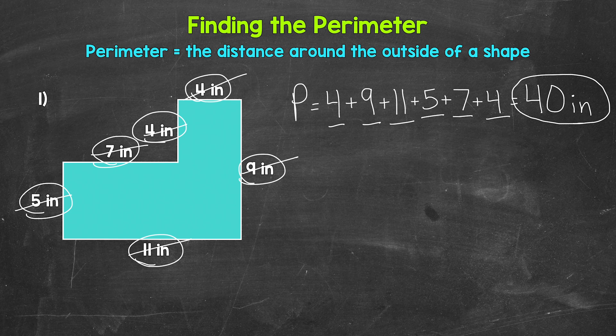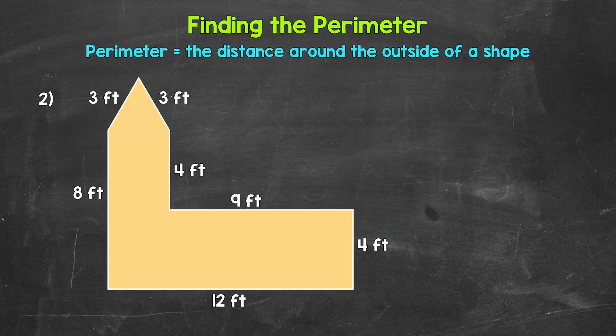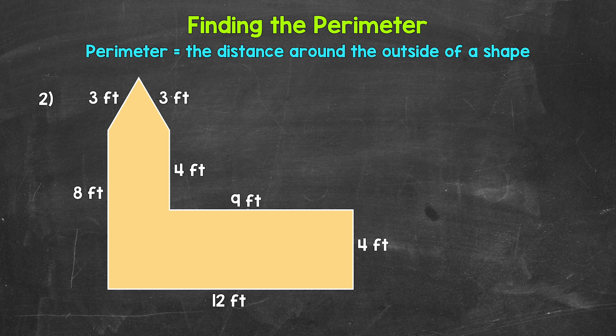Let's move on to number two. Taking a look at number two, let's find the perimeter here. So I'm going to write this out off to the side. So perimeter equals, and let's start up top here with this three feet right here.